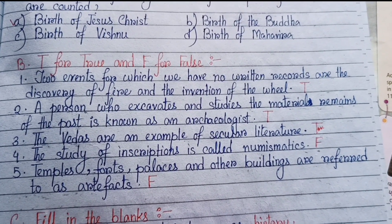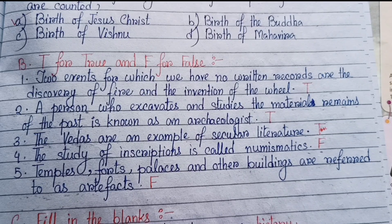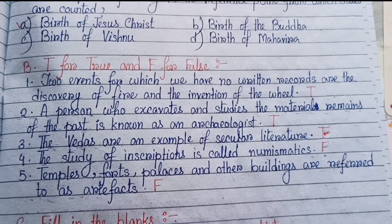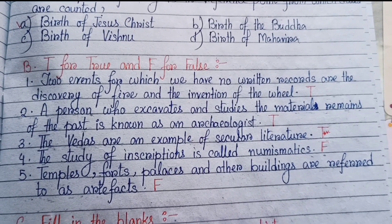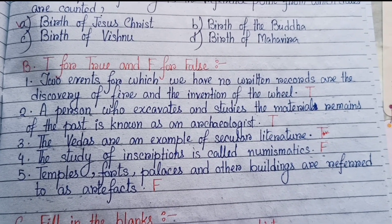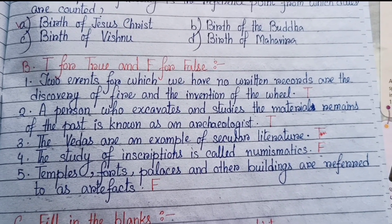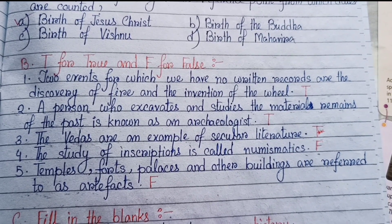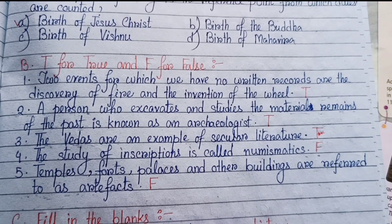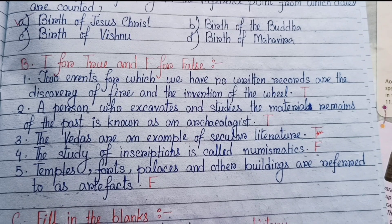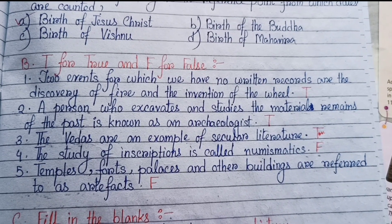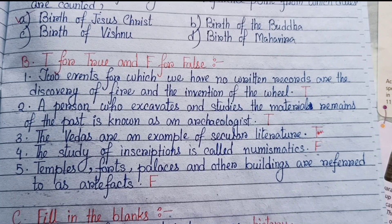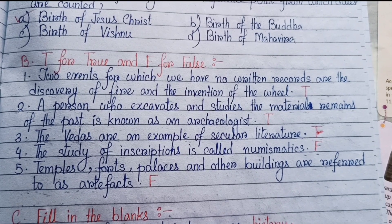Section B: True or False. Number one: two events for which we have no written records are the discovery of fire and the invention of wheel — True. Number two: a person who excavates and studies the material remains of the past is known as an archaeologist — True.